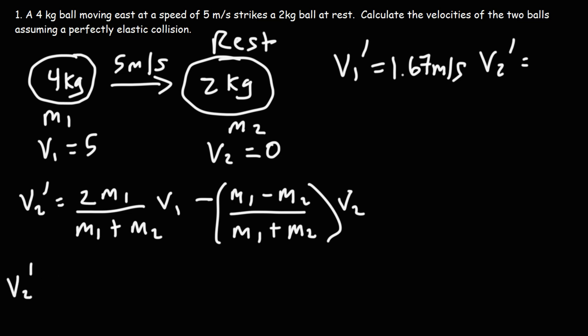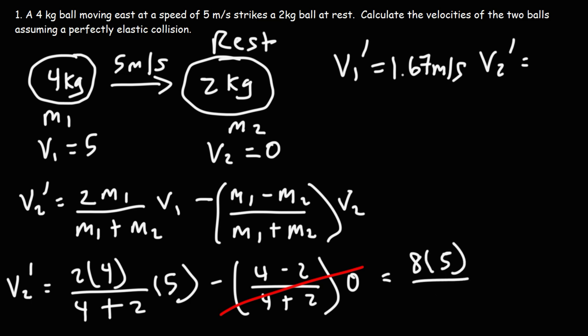So V2 prime, the final velocity of ball two, is going to be 2 times M1. M1 is 4 over M1 plus M2. So that's 4 plus 2 times V1. V1 is 5 minus M1 minus M2. That's 4 minus 2. And then this is going to be over 4 plus 2. But V2 is still 0, so that's going to make the computation a lot easier. So now we have 2 times 4, which is 8. And on the bottom, 4 plus 2 is 6. 8 times 5 is 40. 40 over 6 will give us an answer of 6.67 meters per second.